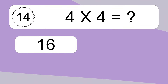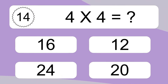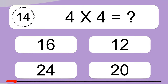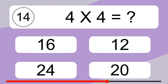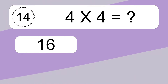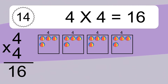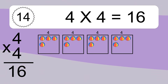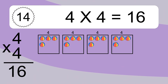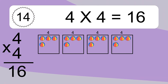4 times 4 equals what? 4 times 4 equals 16. We have 4 boxes and each box has 4 colorful balls inside. If you count all the balls in all the boxes together, you will have 4 times 4 balls. This equals 16 balls.